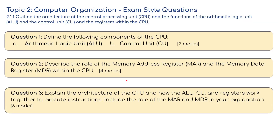I've got three questions. First, for two marks: (a) what is the ALU, the arithmetic logic unit? (b) what is the control unit? Question two: describe the role of the memory address register (MAR) and the memory data register (MDR) within the CPU. And question three, for six marks: explain the architecture of the CPU and how the ALU, CU, and the registers work together to execute instructions, including the role of the MAR and MDR in your explanation. If you want to have a go at these before I show you the answers, please pause the video.